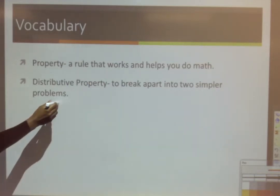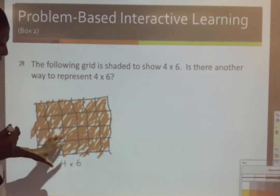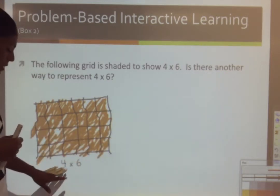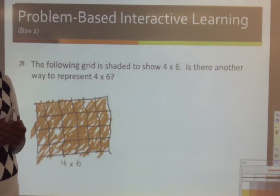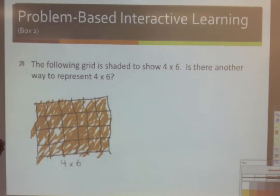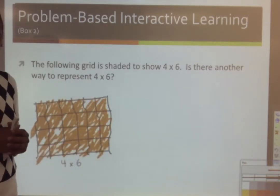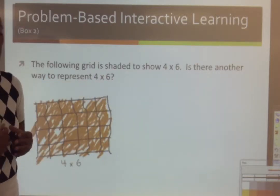Let's begin with the problem-based interactive learning. The following grid is shaded to show 4 times 6. Is there another way to represent 4 times 6? I drew a grid and I shaded it to represent 4 rows and 6 columns for a total of 24 squares shaded. Now what I would like to do is break apart this grid to represent 4 rows and 6 columns in a different way.